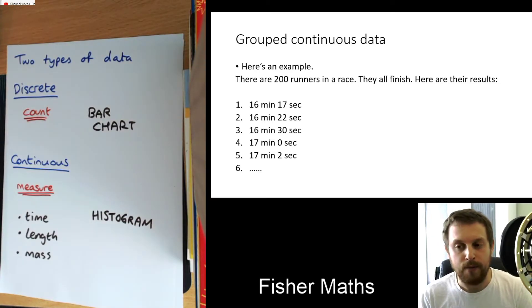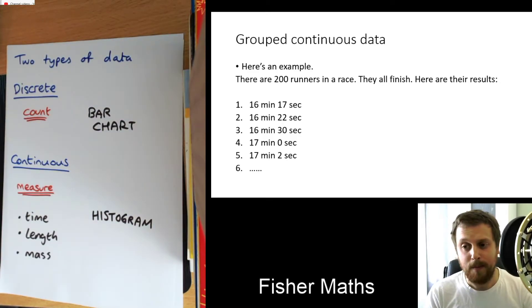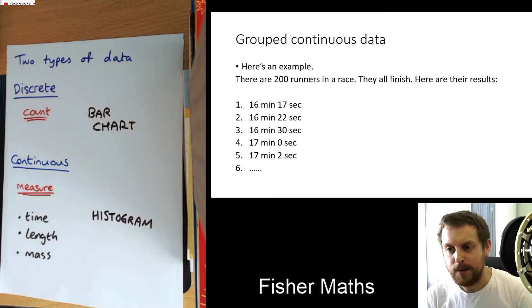So there are 200 runners in a race. They all finished, so they all get a time. And I've begun to list their results. So the first person got 16 minutes, 17 seconds, then the person who came in second was five seconds slower. And then it goes on. Now, if you notice, I haven't written all 200 times down. What we're going to do is we're going to pretend that we have 200 times all written down. And then what we would notice, hopefully, is that's a lot of information to have out on a bit of paper in front of you, all 200 times.